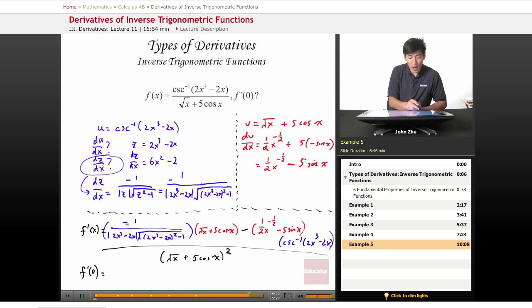So negative 1 over 2 times x cubed, we know that's 0, minus 2 times x, which is also 0. So 0 times another term, which becomes 0 automatically. So this first term becomes negative 1 over 0 times something minus the rest over the bottom term.